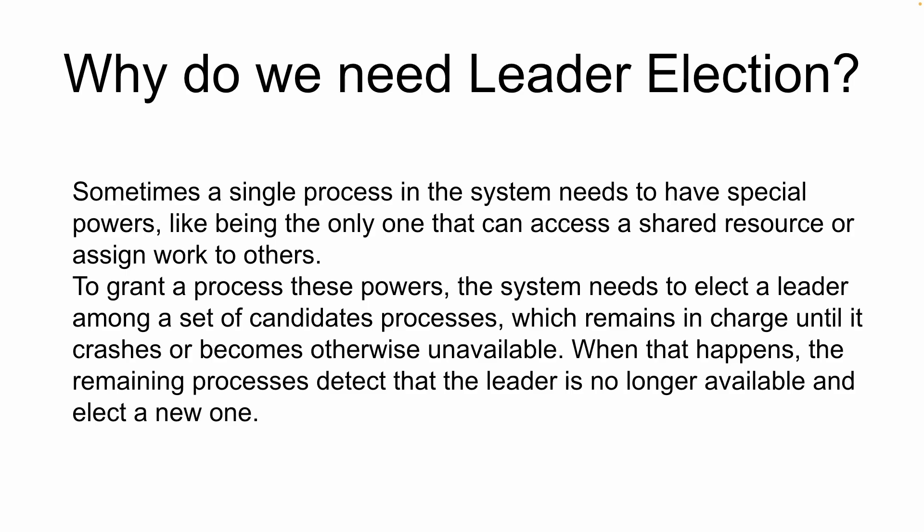Welcome to this video on leader election — what it is, how it's relevant, and what conditions are used to elect a leader in a distributed system. When a distributed system is running with multiple processes or servers, sometimes we need to give a single process special powers, like being the only one that can access a shared resource or assign work to others. These special powers are granted to a single process called the leader, while the others are called followers. To grant these powers, the system needs to elect a leader among candidate processes, which remains in charge until it crashes or becomes unavailable — at which point the remaining processes detect this and elect a new one.